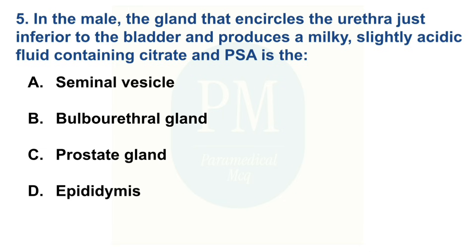In the male, the gland that encircles the urethra just inferior to the bladder and produces a milky, slightly acidic fluid containing citrate and PSA is: Option A: Seminal vesicle. Option B: Bulbo-urethral gland. Option C: Prostate gland. Option D: Epididymis. The correct option is Option C: Prostate gland.